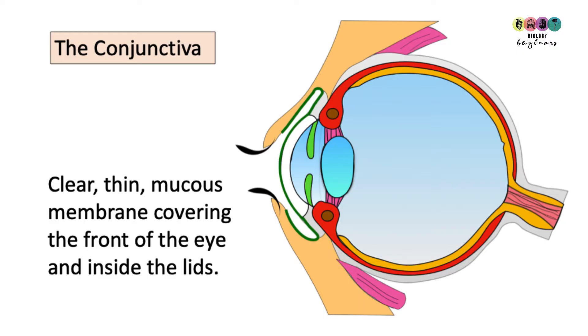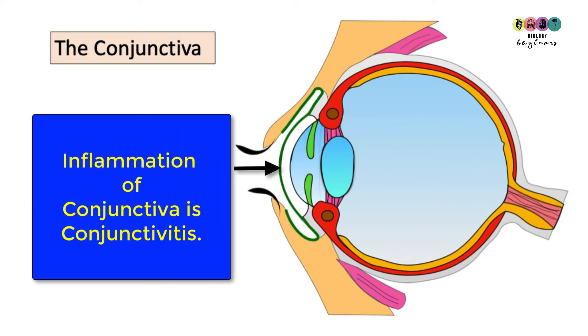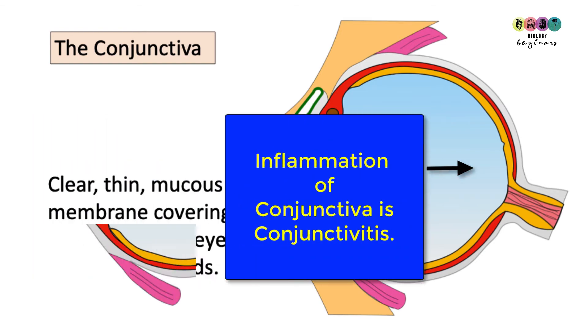So what is the conjunctiva? Well it's this clear thin mucus membrane. It produces mucus and it covers the outer surface of the eye, the front of the eye, and also lines the inside of the lids. Because it produces this mucus it lubricates the eye and also protects it from irritants. If it gets inflamed because of infection it's known as conjunctivitis which many children and adults get.